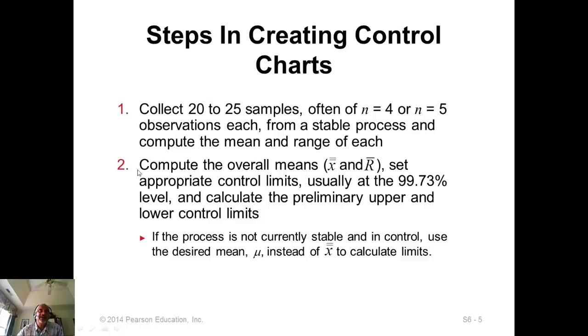And then in the second step, you compute the mean of all the means that you calculated and the mean of the ranges. So now you have X double bar and R-bar. With these, we will be able to develop the control charts. Usually we'll use 99.73% level for the limits. If the process is not currently stable and in control, then we can either use the desired mean as mu instead of X double bar to calculate the limits, or you have to investigate and make sure that the process is stable, so you can use the X double bar value at the center as the target value.